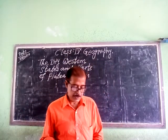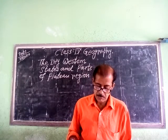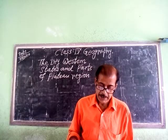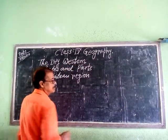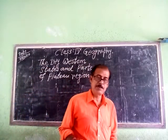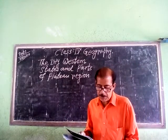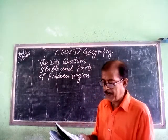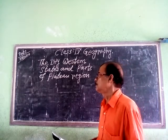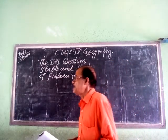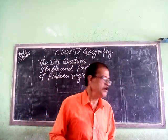Rajasthan is the largest state in our country in terms of area. It covers most of the area of the Great Indian Desert. The Great Indian Desert makes it a dry region.